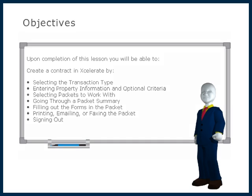Upon completion of this lesson, you will be able to create a contract in Accelerate by selecting the transaction type, entering property information and optional criteria, selecting packets to work with, going through a packet summary, filling out the forms in the packet, and then printing, emailing, or faxing the packet, and signing out.